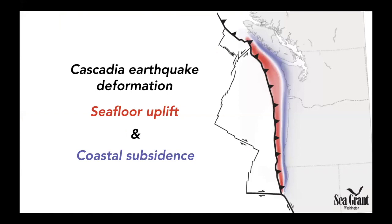In the animation I showed, we saw a piece of seabed popping up. This is a map view of where you would expect areas where the seafloor would move up versus areas where the coastline may subside. Areas that go up during an earthquake are shown in red and areas that will subside or sink down are shown in blue. Notice that the areas that subside sort of hug right along the coastline.